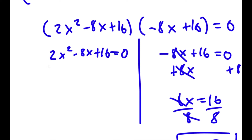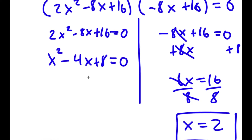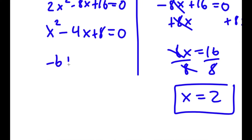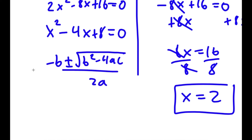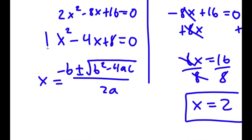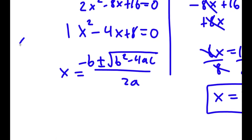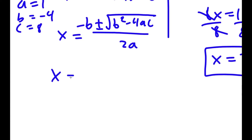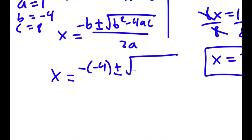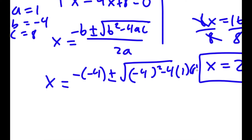For 2x squared minus 8x plus 16, I can factor out 2, so I get x squared minus 4x plus 8 is equal to 0. Using the quadratic formula, x equals negative b plus or minus the square root of b squared minus 4ac all over 2a. So in this case, a is 1, b is negative 4, and c is 8. So I get x equals negative of negative 4 plus or minus the square root of negative 4 squared minus 4 times 1 times 8 all over 2 times 1.